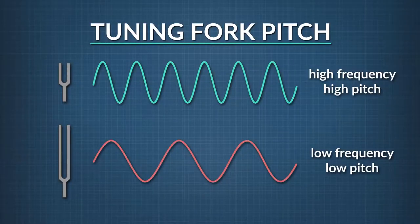Tuning forks come in different dimensions and produce different and unique resonant frequencies. The shorter the tuning fork, the greater the resonant frequency, and the higher the pitch or note.